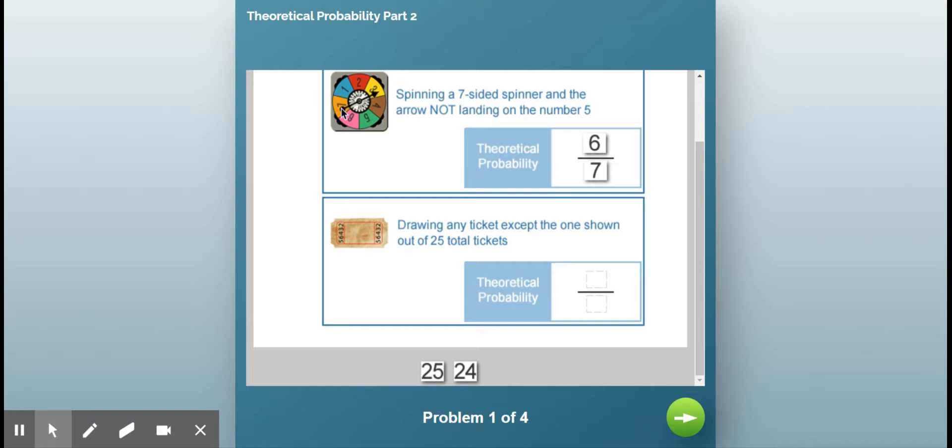So drawing any ticket except the one shown out of 25 total tickets. Well, if you've ever seen a roll of tickets, they're all numbered. They're all numbered differently. And I throw all the tickets into there. There are 25 total. This one only, I don't want to draw. So that means I could draw 24 of the other tickets.